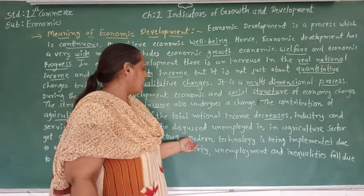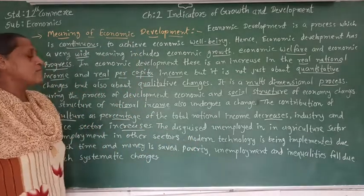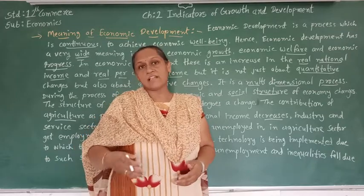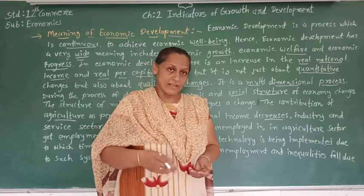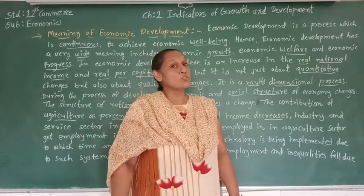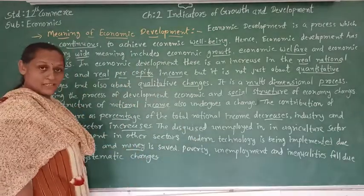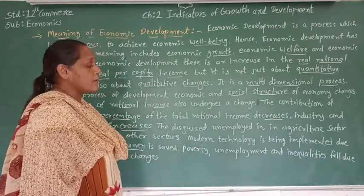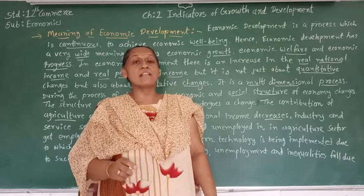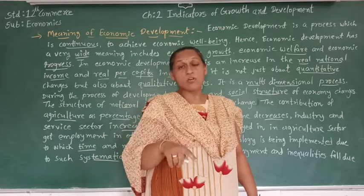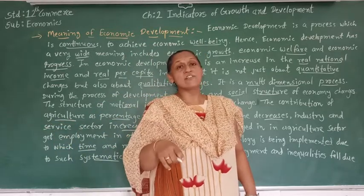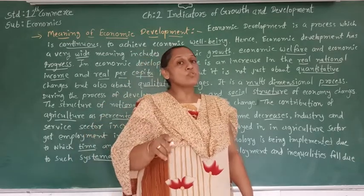Modern technology is being implemented, due to which time and money are saved. During development, technology changes in all three sectors. In the agriculture sector, people are adopting modern technology, modern seeds, and modern machines to cultivate land, saving both time and money. During development, poverty, unemployment, and inequality fall due to systematic change in the economy. The unemployed people get jobs in other sectors, reducing both unemployment and poverty, and inequality is also reduced.